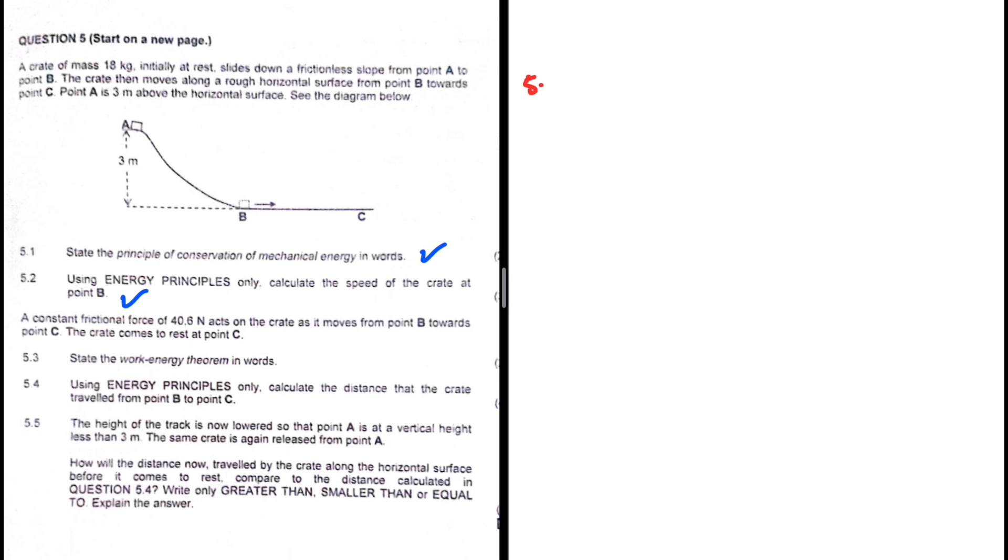Let's take a look at our creation statement and see exactly what is going on. A crate of mass 18 kg, initially at rest, slides down a frictionless slope from point A to point B. The crate then moves along a rough horizontal surface from point B towards point C. Point A is 3 meters above the horizontal surface. See the diagram below.